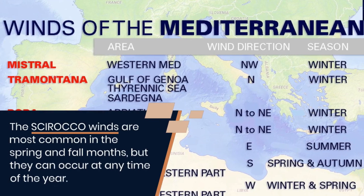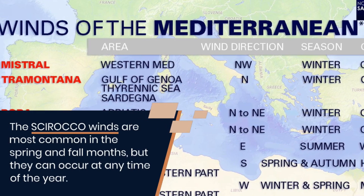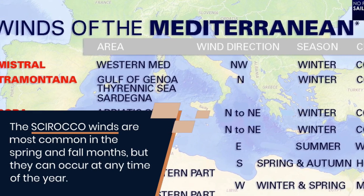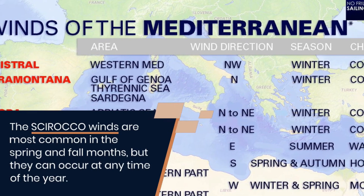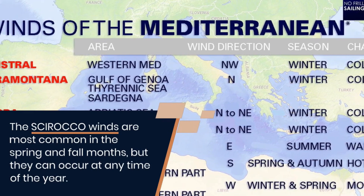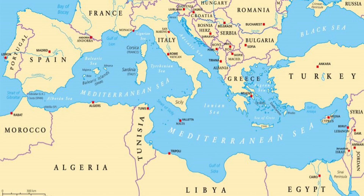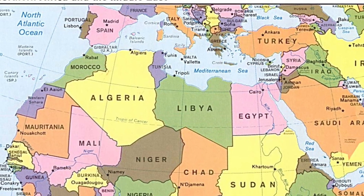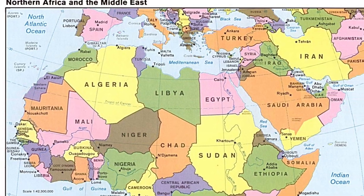The Sirocco winds are most common in the spring and fall months, but they can occur at any time of year. They affect parts of Europe including Italy, Spain, Portugal, and Greece, and as mentioned before, North Africa including Morocco, Algeria, and Tunisia.